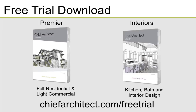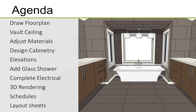We're going to be using Chief Architect Premier today, but everything we do in today's demonstration you can also do in Chief Architect Interiors. If you haven't used Chief Architect yet or you're using an older version of the software, you can download a free trial at chiefarchitect.com/freetrial. We're going to get started by drawing out our initial floor plan and then vaulting the ceiling, then adjust some materials of the structure. Next we'll design our cabinetry and create wall elevations, complete a glass shower, design our electrical plan, go through the 3D rendering options, and then create schedules and layout sheets.